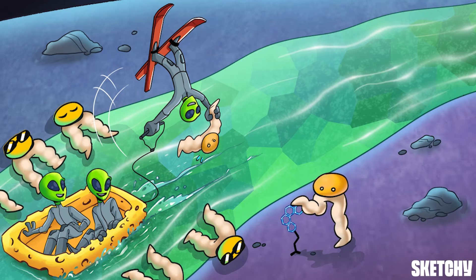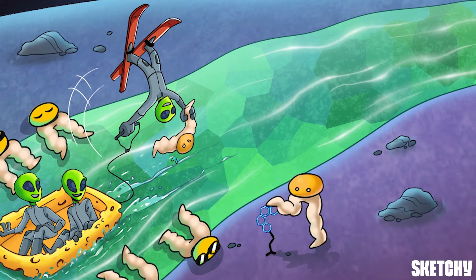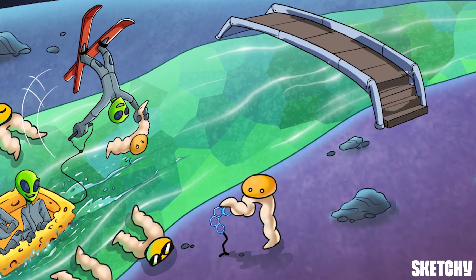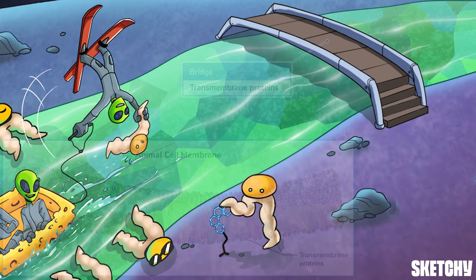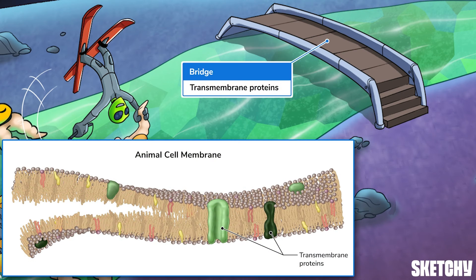Alright, that's it for lipids! Next up, cell membrane proteins, starting with transmembrane proteins. Transmembrane proteins pass through the entire cell membrane, just like this bridge spanning the entire river. These proteins connect the cytosol with the extracellular environment. Most transporters, channels, and receptors are transmembrane proteins.